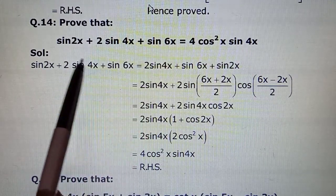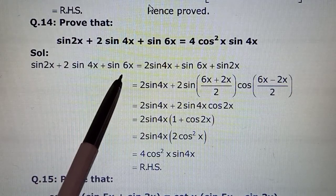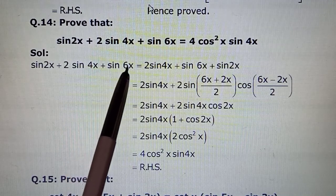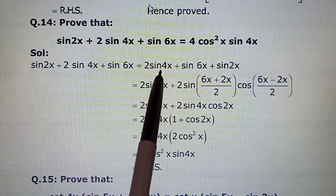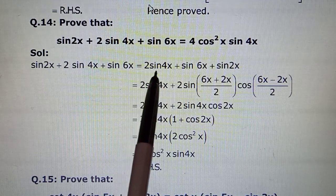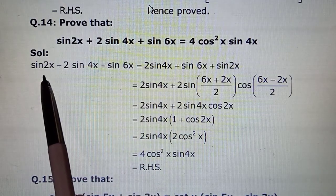So if you start with your left hand side which was given as this, keep aside your 2 sin 4x. Kiunki wo proof mein required tha, toh usse hum zyada disturbed nahi karenge. And ab humne first and third ke beech mein formula lagana hai. Because humne thoda mental work karke dekha tha ki yehaan se mujhe wapis sin 4x mil raha hai jo mujhe proof mein required hai.